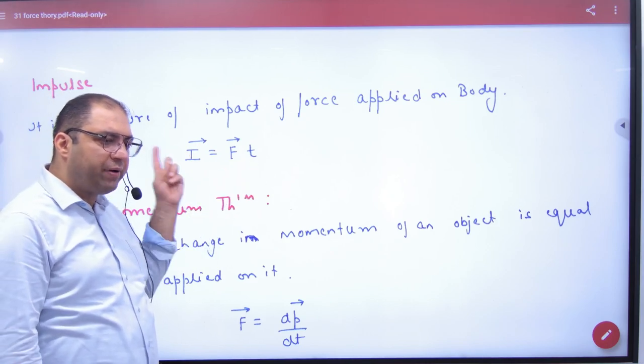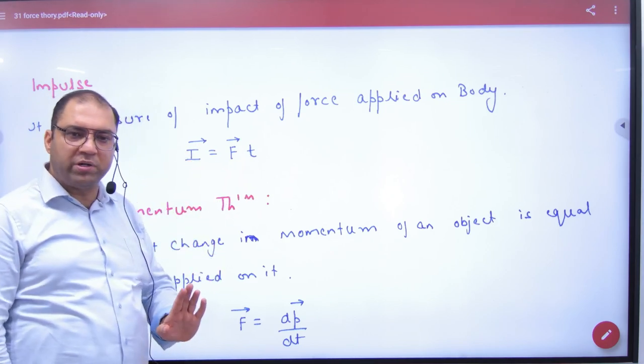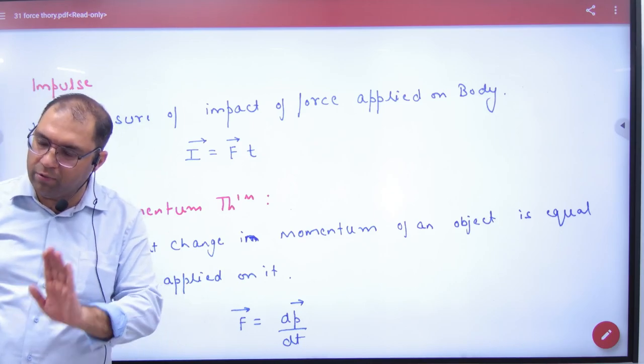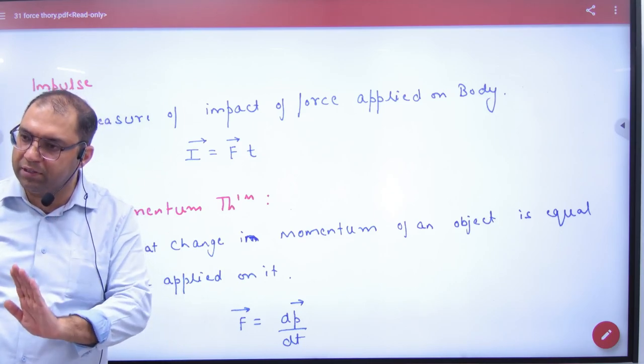Because force is a vector, impulse is also a vector. For every quantity, I am telling you which is vector and which is scalar. So momentum is a vector, impulse is a vector.